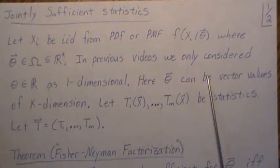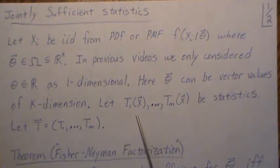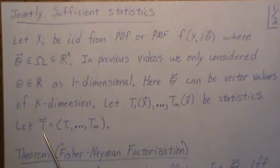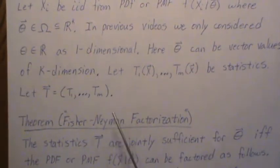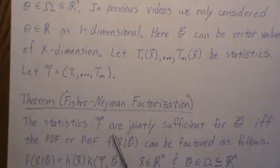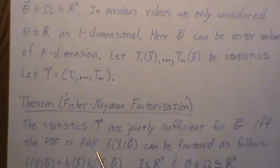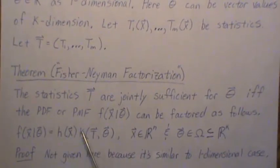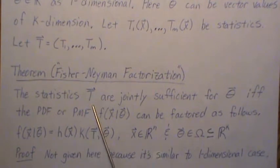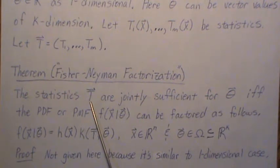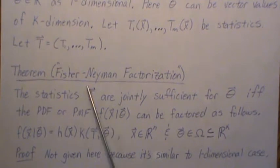Now theta can be vector-valued of k dimensions. Let t1 through tm be statistics, and we'll represent all of these in a vector t. The Fisher-Neyman factorization theorem — I put quotes around it because the previous video only deals with real-valued parameters — but the theorem for vector-valued parameters is actually the same as for the one-dimensional case. A vector of size one is just one-dimensional, so this is the general way to state the Fisher-Neyman factorization.